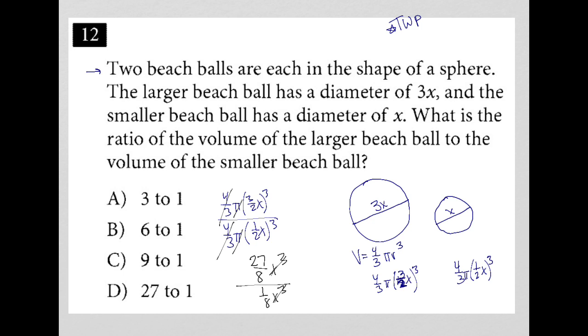The x cubed cross each other out. So I have 27 eighths to 1 eighth. And that's basically 27 to 1. So my answer here is choice D.